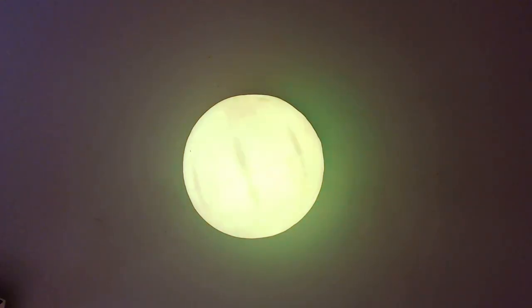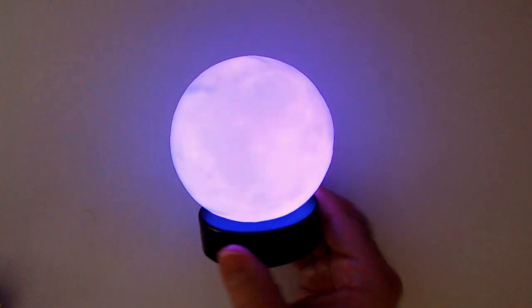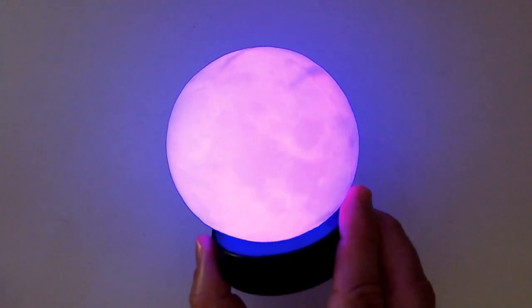So it's just gonna cycle through some colors here. There we go, there's some blue. Purple - that looks like a moon.